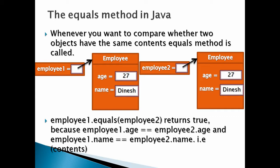Here, employee1.equals(employee2) will return true, because the age of both employees is the same as well as the name of both employees. Which means if we call employee1.age == employee2.age, true will be the outcome, and employee1.name == employee2.name, true will also be the outcome.